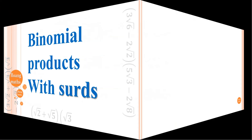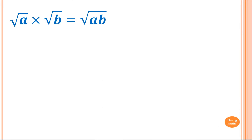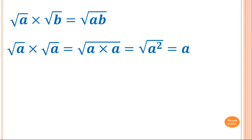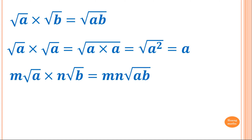I'll just quickly go through a few rules we're going to apply in these videos. Square root of a times square root of b is square root of ab. Square root of a times square root of a is a, of course. And m square root of a times n square root of b is mn times square root of ab.